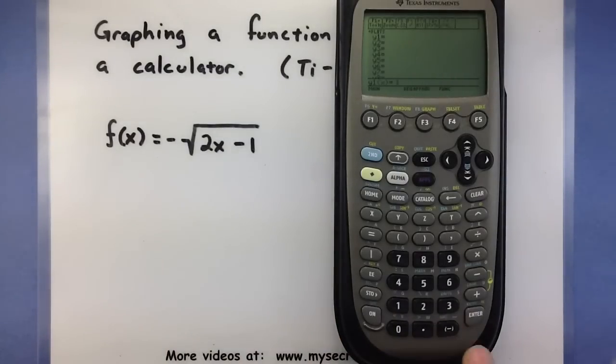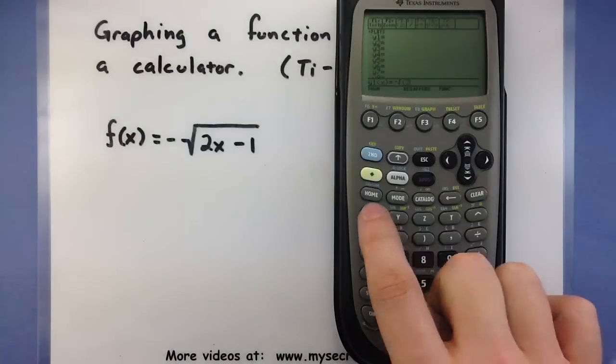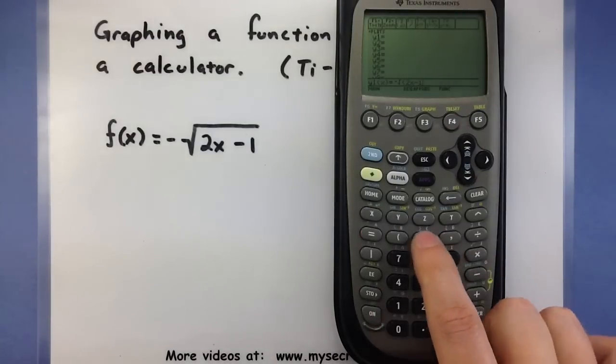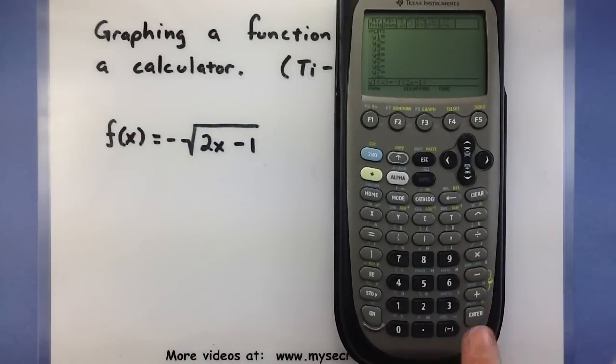I have negative square root of 2x minus 1, close parentheses. Press enter and that will store it into the calculator.